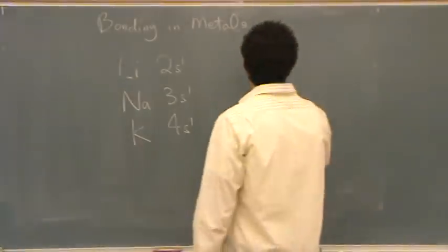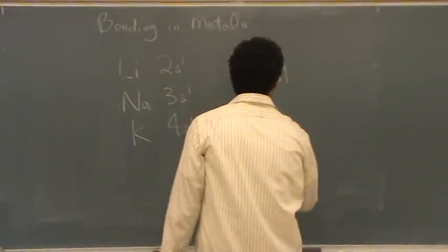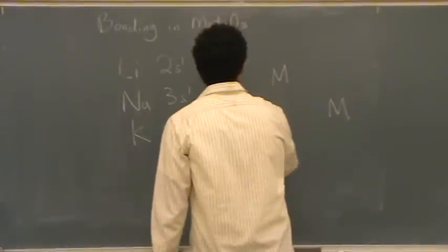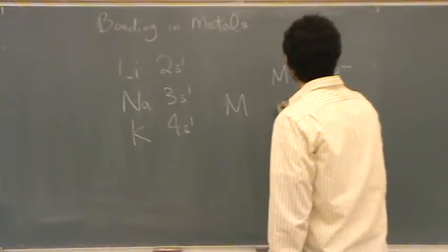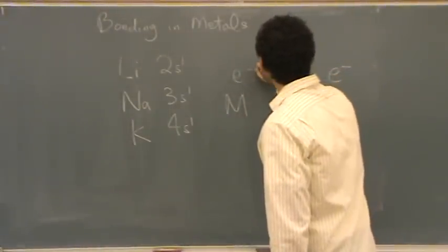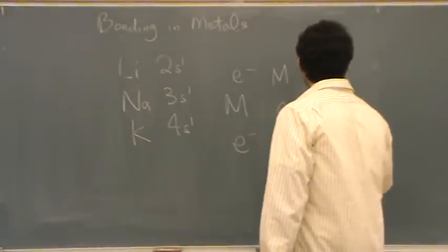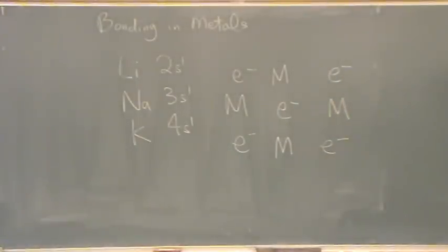One model is called the Electron Sea Model. Let's say we have some metals here, just designated by M, and the one electron that each one brings is just kind of sitting around it in a matrix. Those electrons are associated with a particular metal but not strongly bound to it, so they're free to move in this Electron Sea matrix.